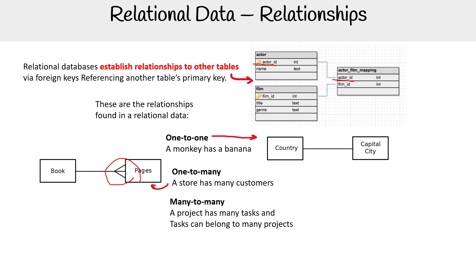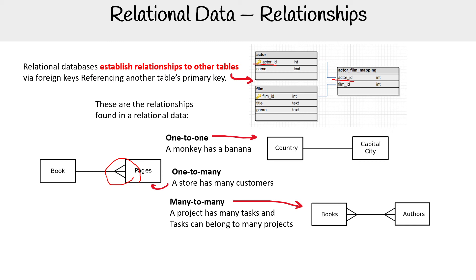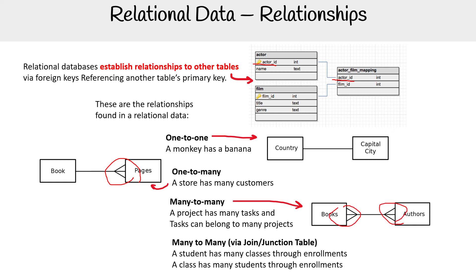Then you have many-to-many. So a project has many tasks, and tasks can belong to many projects. Or a book can have many authors, and an author can have many books. And then last is a variant on the many-to-many, via a join or junction table — I just call them join tables.